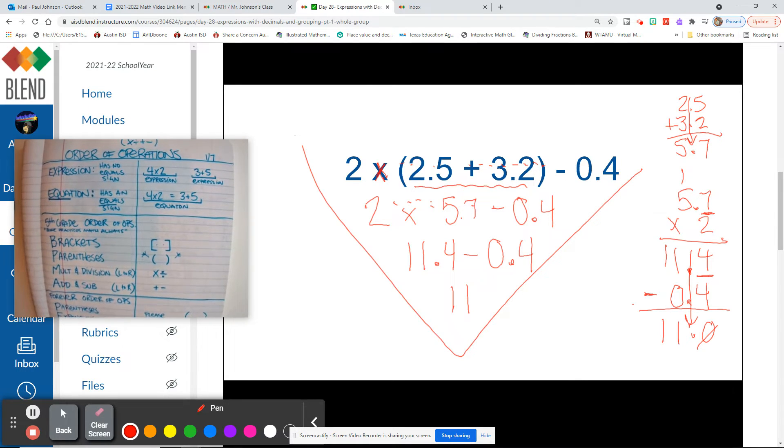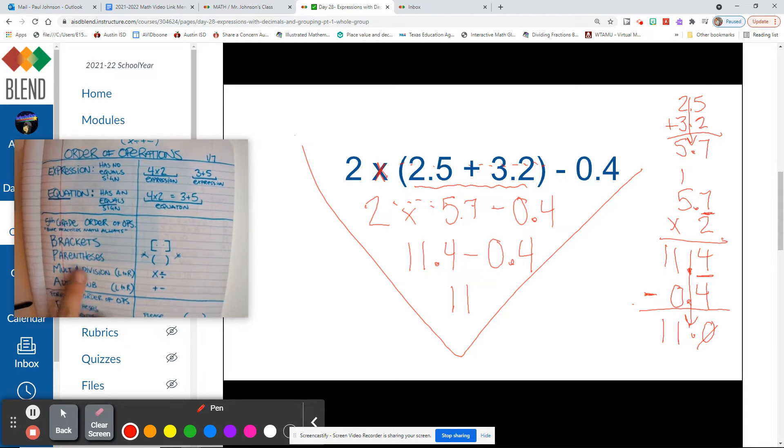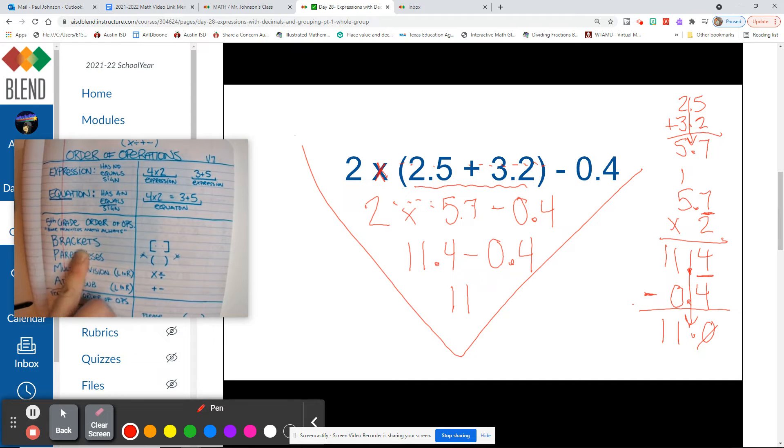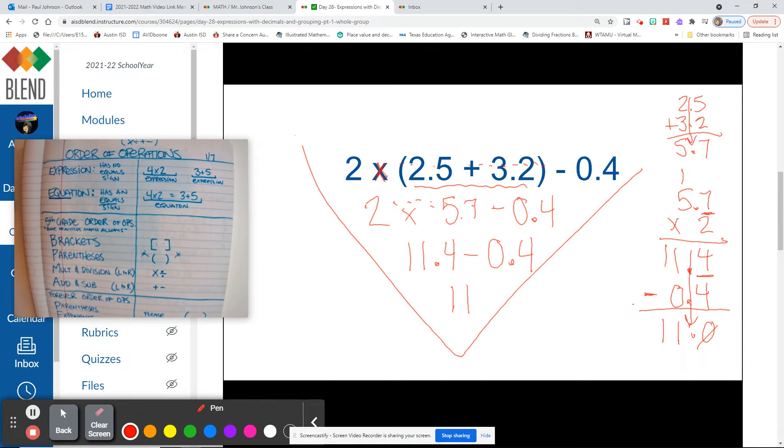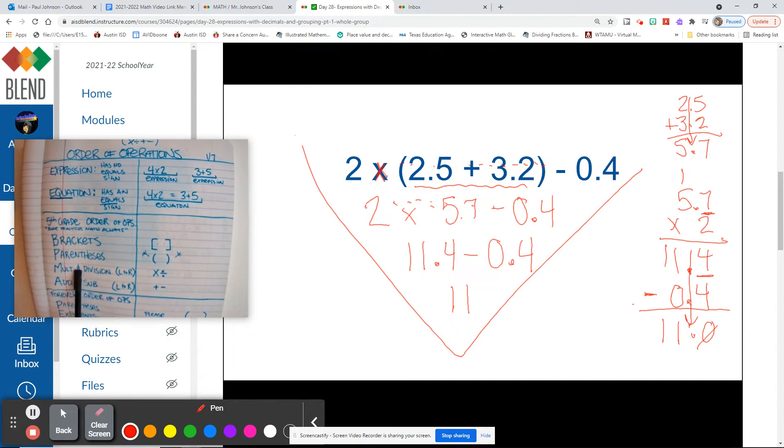So when we simplified that, we worked our way through. We had to do what was in grouping symbols first. Remember, brackets and parentheses are your grouping symbols. Once you've gotten rid of your grouping symbols, you can multiply and divide. Once you've multiplied and divide, you can add and subtract.